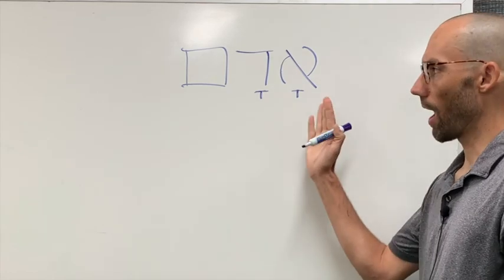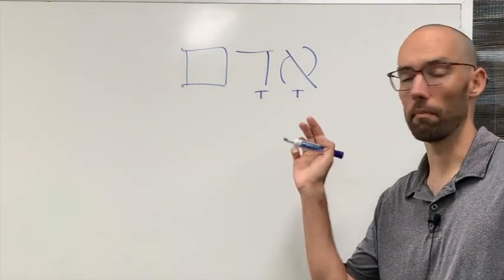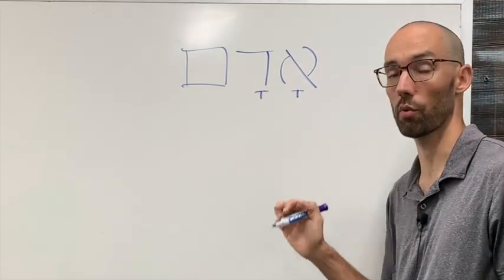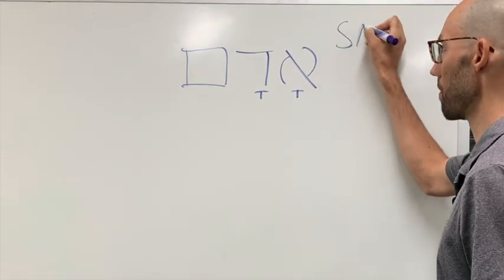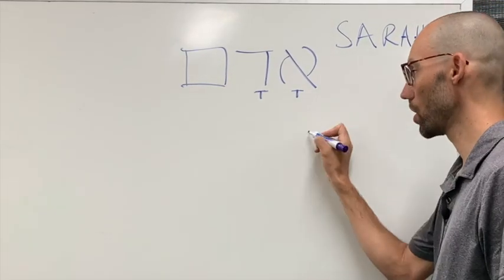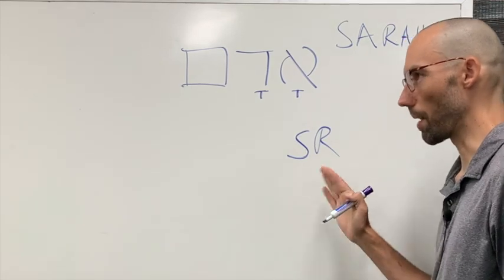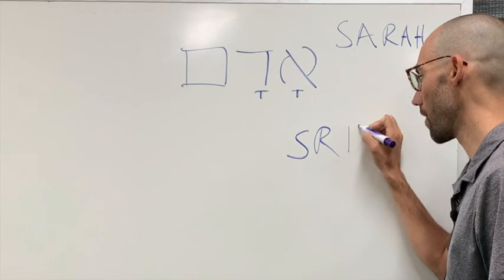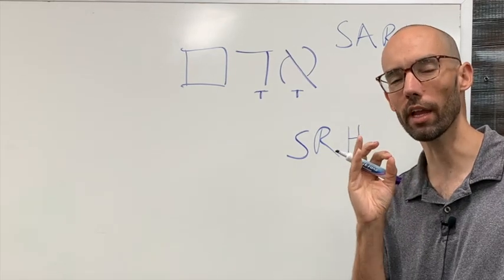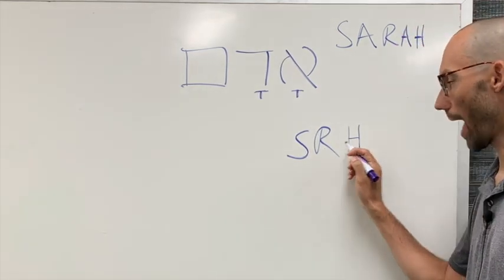What happened was, as the language was developing, occasionally before this system came about, they would use a consonant to work together with a vowel. For example, in English, we have the name Sarah. If you had a system with no vowels, you would write S-R. But they thought, if we put an H here, that would help give a clue that it's an ah, because at the end of an ah, there's a natural little H as you're fading off that.